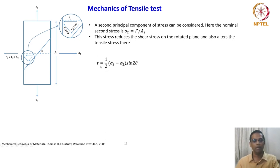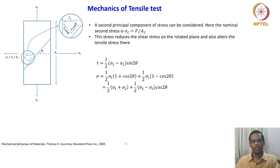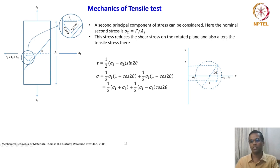The shear stress in biaxial tension is given by (σ₁ − σ₂)/2 · sin 2θ. The tensile stress can be written as ½ σ₁(1 + cos 2θ) + ½ σ₂(1 − cos 2θ), which is a combination of the two principal stresses plus the difference in principal stresses times cos 2θ. These can be plotted on a Mohr circle where the two principal stresses are σ₁ and σ₂.